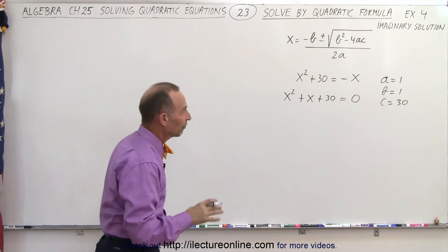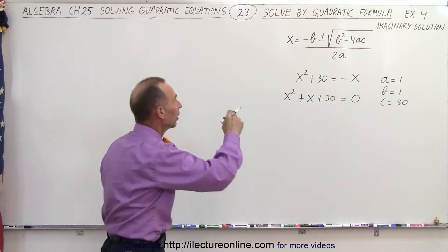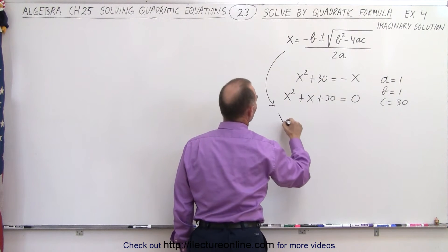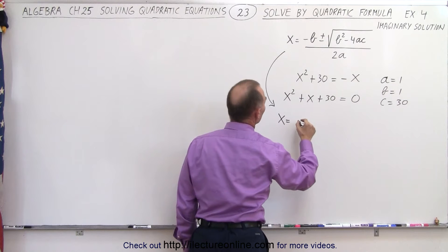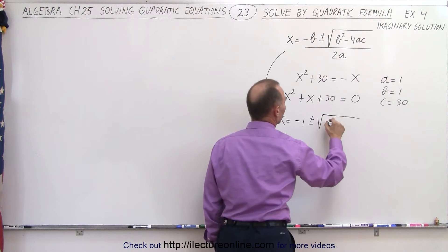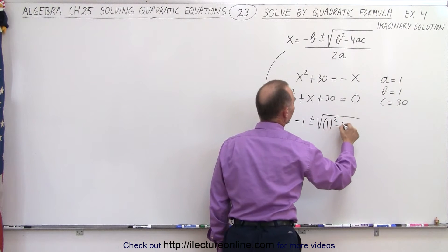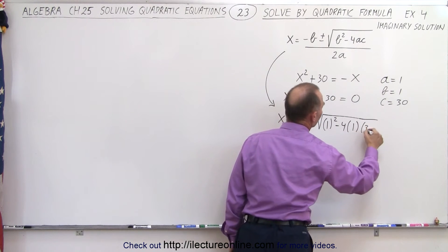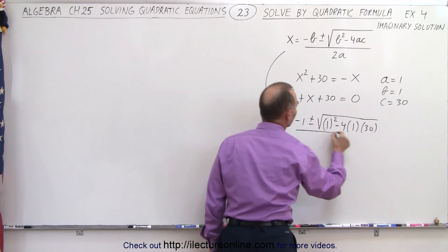Once you have those coefficients a, b, and c, you just simply plug those into the quadratic formula, and we end up with x is equal to minus b, which would be minus 1, plus and minus the square root of b squared, which is 1 squared, minus 4 times a times c, which is 30, all divided by 2 times a.